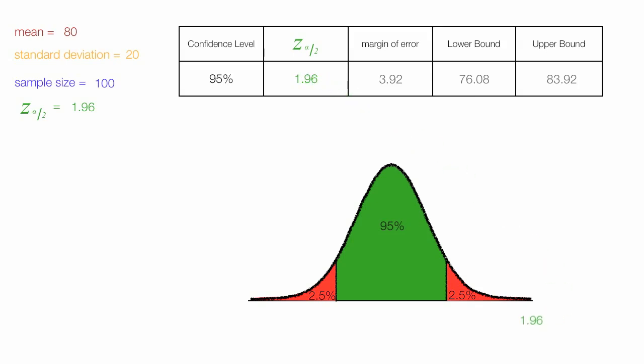Now I can take that 1.96 and put it there where that black line is. And on the other side, I can put 1.96 as well. But it turns out that's negative 1.96 because it's to the left of the mean.